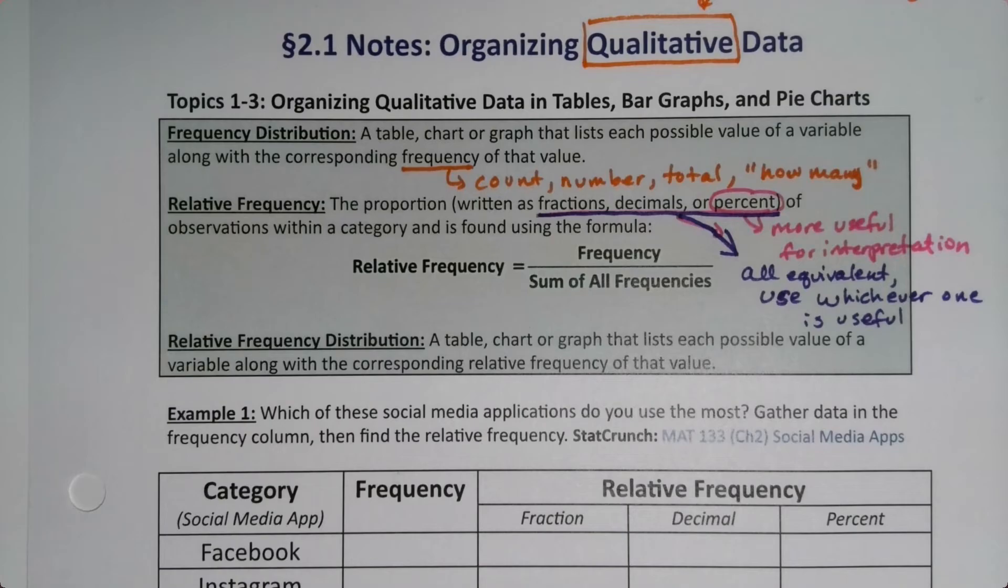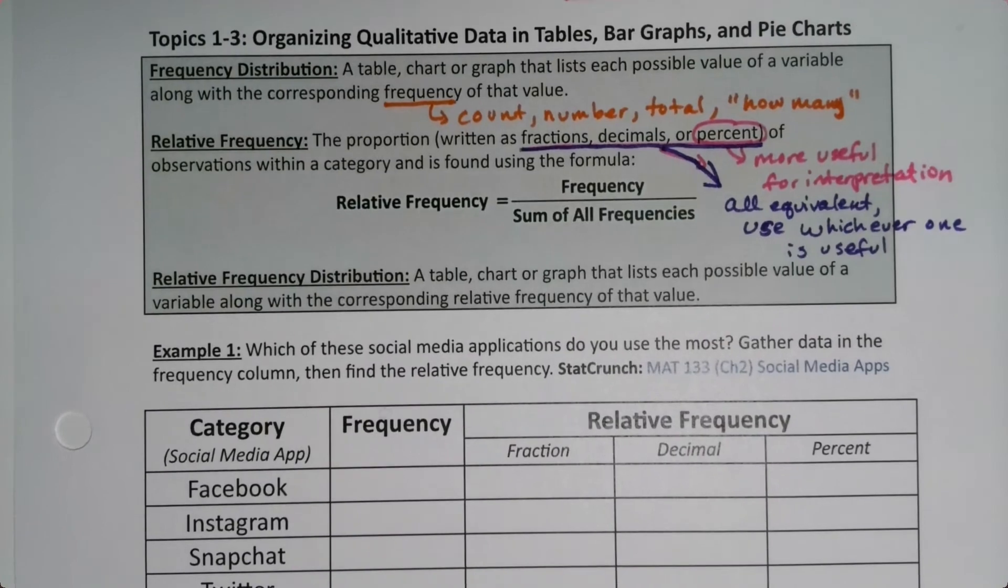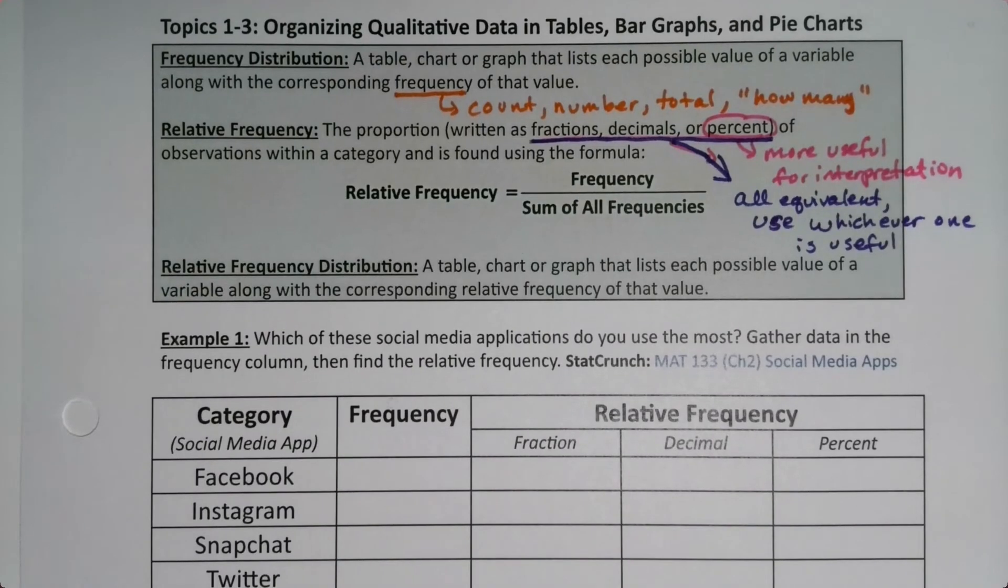Basically what you're going to do is you're going to take the frequency for the category and you're going to divide it by the sum of all the frequencies, also known as the total for all the frequencies. And then a relative frequency distribution is just a table or chart that shows those values. So it will have all the categories and the relative frequencies. Simple as that.